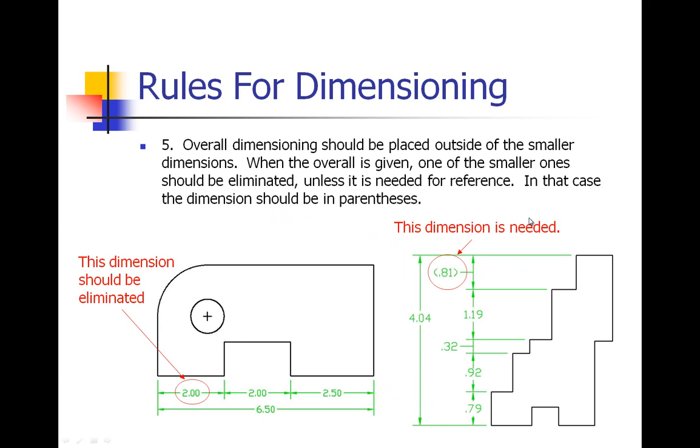Number five: overall dimensioning should be placed outside of the smaller dimensions. So for example on this drawing here, our overall dimension of 6.50 inches is on the outside of these smaller dimensions. On this shape on the right here, our 4.04, that is outside of this row of smaller dimensions. Now when you do use the overall dimension, one of the smaller ones should be eliminated. So for this 6.50 we don't need to put all three of those smaller dimensions because we can do just a little bit of math to figure out the last one.